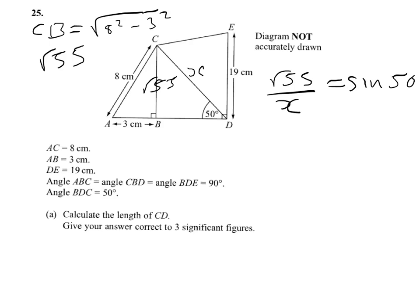So we'll rearrange that equation to make x the subject, and we'll get x equals the square root of 55 over sine of 50, which when you round it to three significant figures comes to 9.68, and that's our length CD.